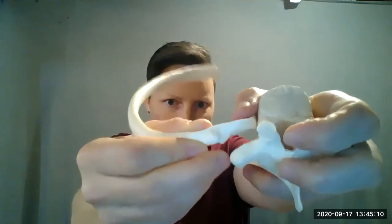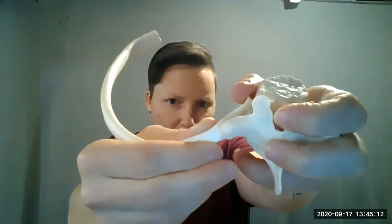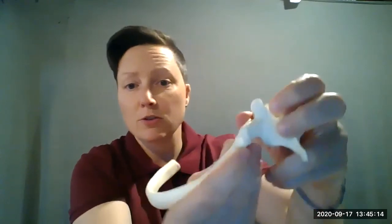...transverse process. So the tubercle of the rib, which is a T word, attaches to the transverse process of the vertebra, which is another T word. So that's a good way to remember that those go together where the ribs attach to the vertebrae.